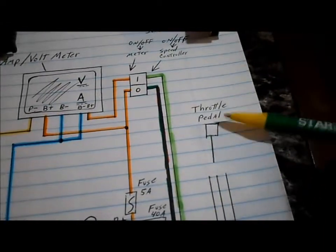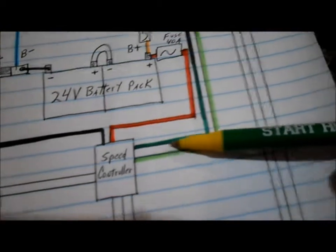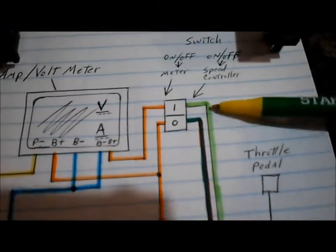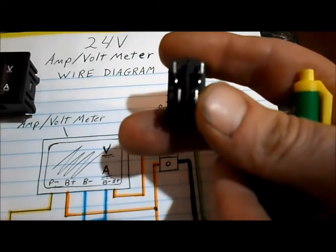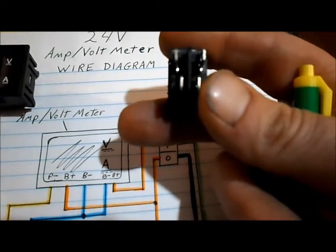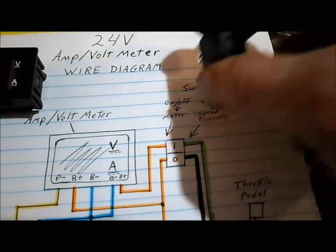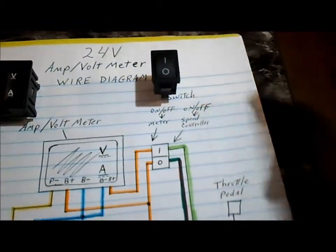And then this represents your throttle. And your on off switch for your speed controller comes up to this switch. This is a double pole single throw switch. So it can control two circuits at once.